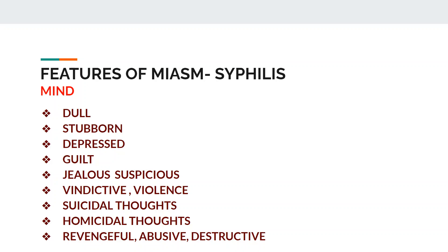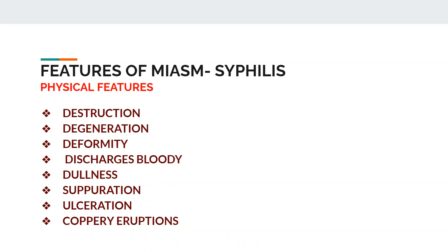Physical violence will be seen in syphilitic miasm. Physical features include pathology of a destructive variety — destruction, degeneration, and deformity will be common. Discharges are bloody, there is dullness, and there is suppuration. Discharges lead to ulceration, bloody discharges, and coppery eruptions.